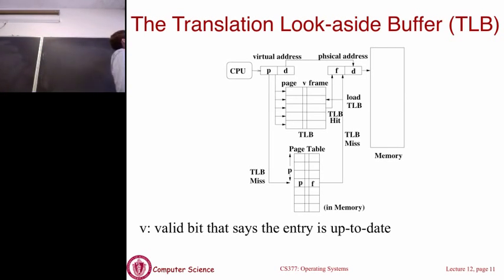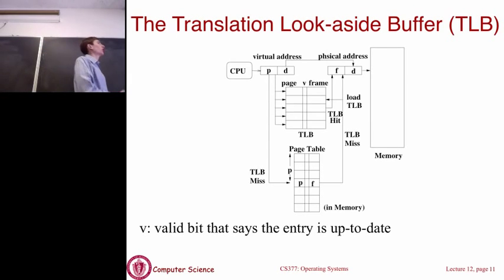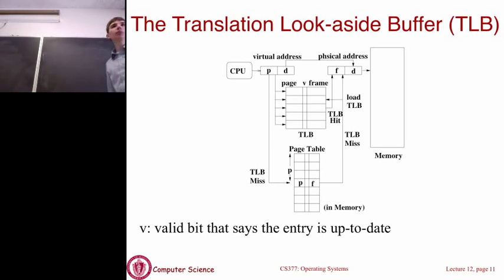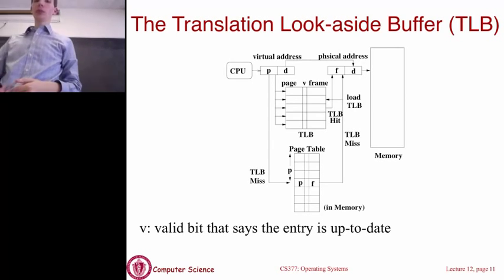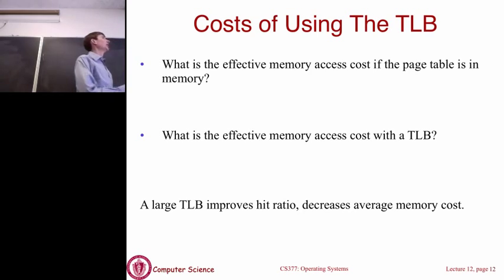Basically, the TLB serves as hardware that lets us store the page table in memory so it can be as large as we want, while still giving fast performance by not forcing us to go to memory most of the time. In practice, most of the time you're going to find the pages you need in the TLB.